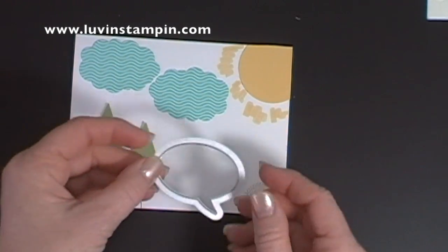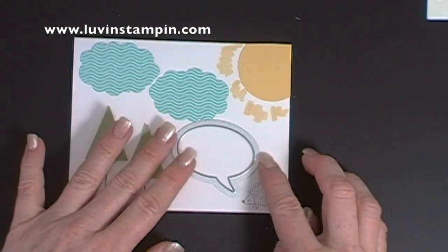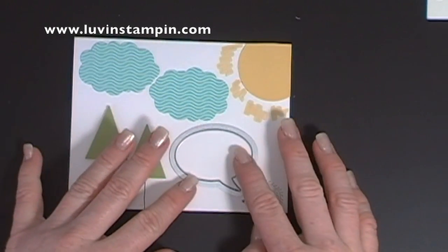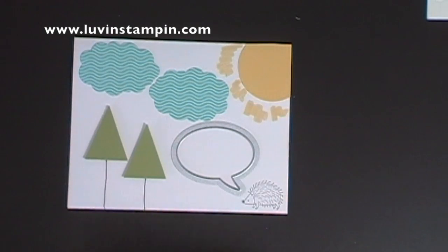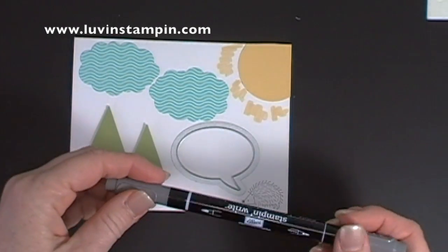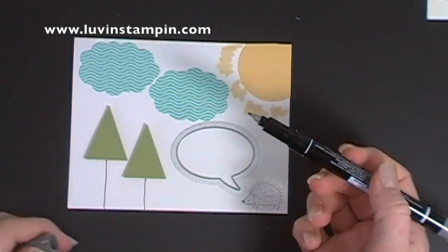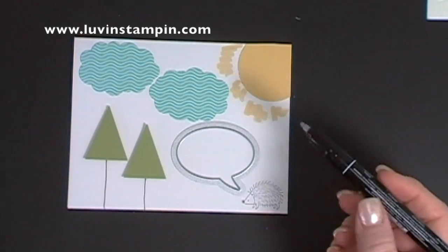So what I'm going to do is I'm going to lay this down just like that on my cardstock, and you don't want to push too hard on your fingers because you'll cut your finger. They are very sharp, and then I'm coming in with basic gray stamp and write marker, and I'm using the fine tip point.